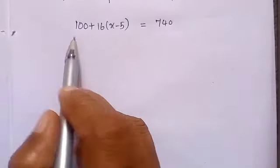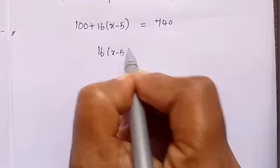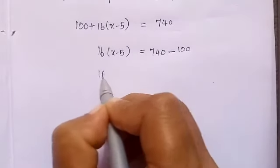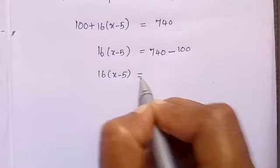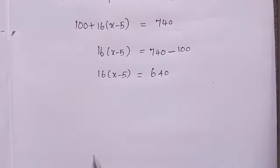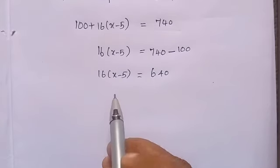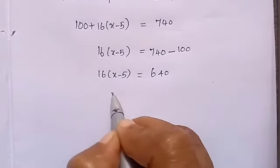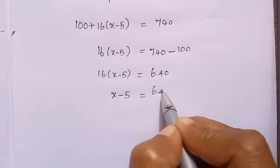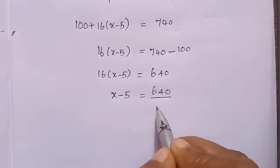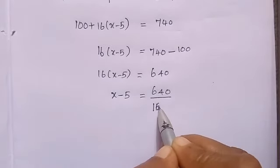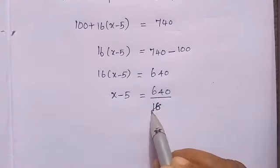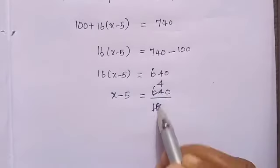Now, we can shift 100 to the right side. So, 16 into (x minus 5) equal to 740 minus 100. So, 16 into (x minus 5) equal to 640. Now, multiply x minus 5 into 16, or we can shift 16 to the right side and divide. So, x minus 5 equal to 640 divided by 16. 16 goes into 64 four times — 4 into 16 equal to 64.